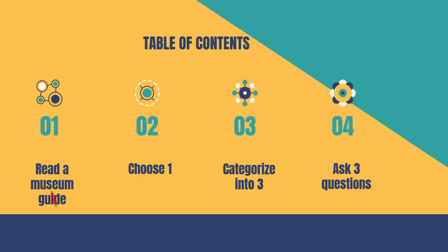So, just now we read a museum guide. Exercise 2, you choose one preference — which section of the museum you want to visit. Exercise 3, you categorise the blue words into three subheadings: space, medicine, and environment. And Exercise 4, you write three questions about the three subheadings. That's all for today. If you have any questions, you can ask me here or in our Telegram group. Thank you for listening. Bye-bye.